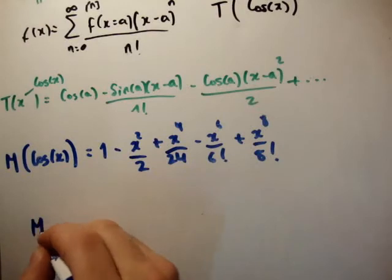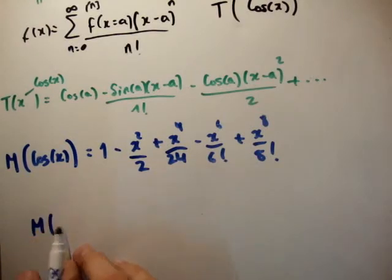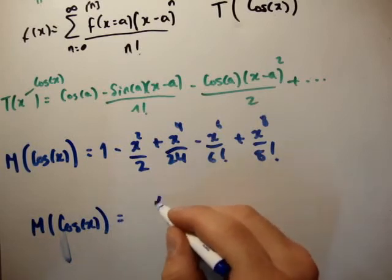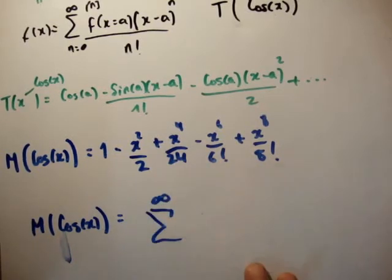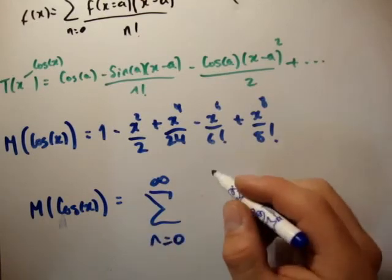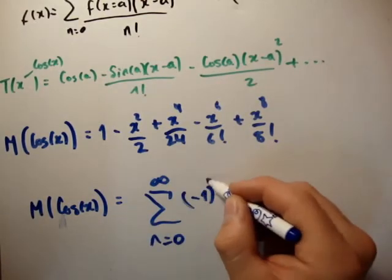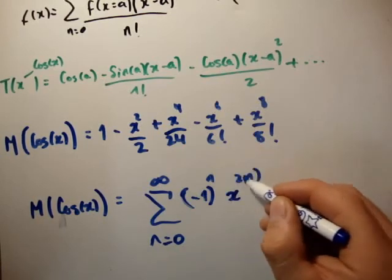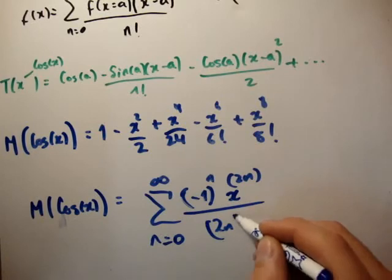Or, if you want, you can rewrite that the McLaren series of cos of x is equal to infinite power series, starting at n is equal to 0, and we have minus 1 to the n to account for the negative sign oscillating. We have x to the power of 2n, and we divide that then by twice n factorial.